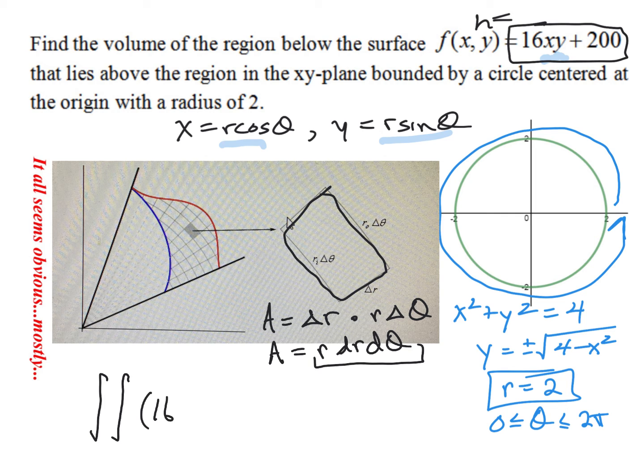We'd have our 16. And instead of x, we write r cosine theta. Instead of y, we write r sine theta. And we write plus 200. This is our height. And then we have to write r dr d theta like that. And again, it's because this is serving as the height of our kind of three-dimensional shape. And this is serving as the area of the base. And of course, the most forgotten thing is this r.